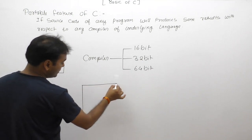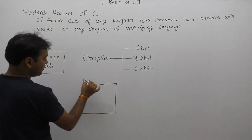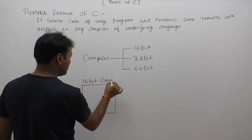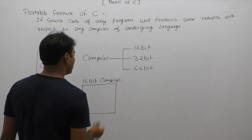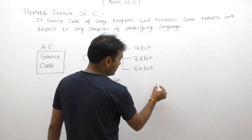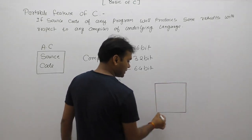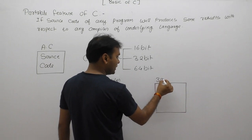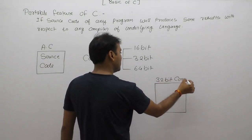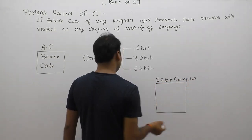Suppose we have two different compilers of any programming language. The first is a 16-bit compiler — this could be a 16-bit compiler for C, C++, or some other language. The second one is a 32-bit or 64-bit compiler. Here we are discussing with respect to C language using a 32-bit compiler of C.